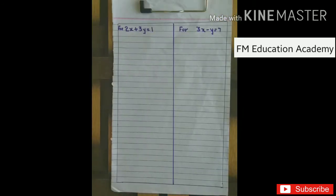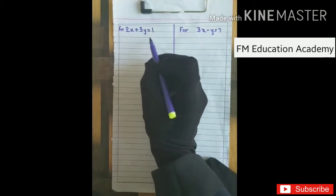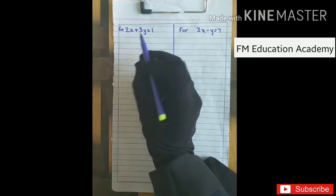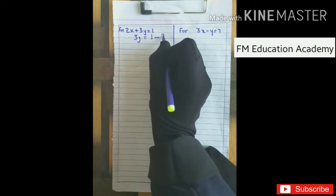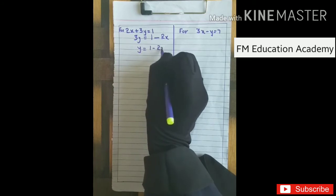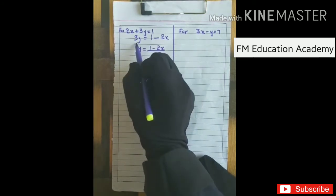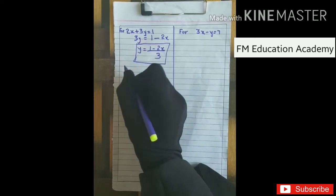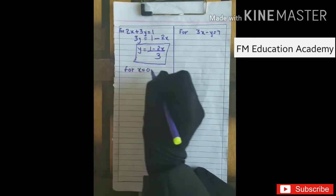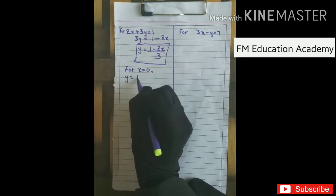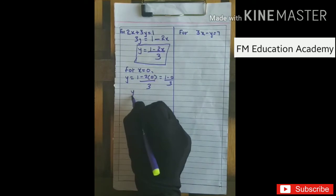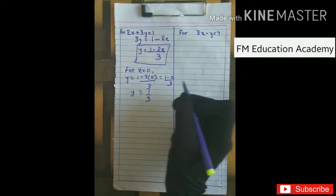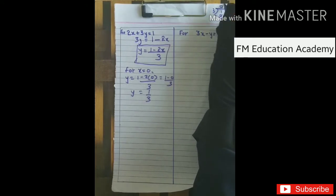The first equation was 2x plus 3y equals 1. Keeping y on one side: 3y equals 1 minus 2x, so y equals (1 minus 2x) by 3. Now I'll substitute different values of x to find y. For x equals 0: y equals (1 minus 2 times 0) by 3, which gives y equals 1 by 3, approximately 0.33.